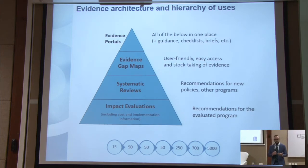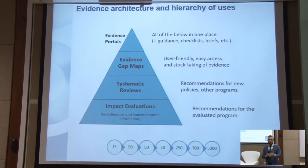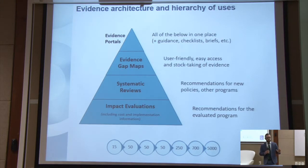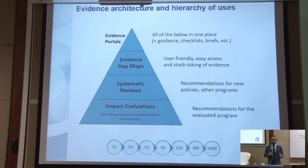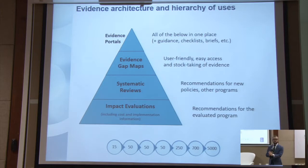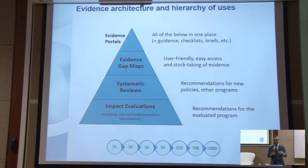Evidence gap maps are something that 3IE created to help give a picture of where, for a particular topical area, there's a strong evidence base and where there is a gap in evidence. The evidence gap maps visually display systematic reviews and impact evaluations of a particular topical area. So at a quick glance, you can see for which types of interventions and outcomes there is evidence to let you know whether or not that is effective. In that interface, you can actually access all of the underlying studies directly.